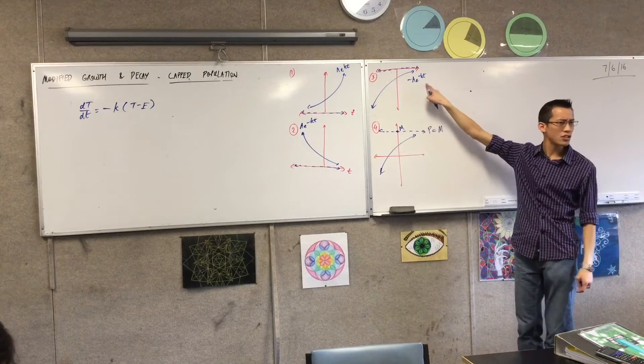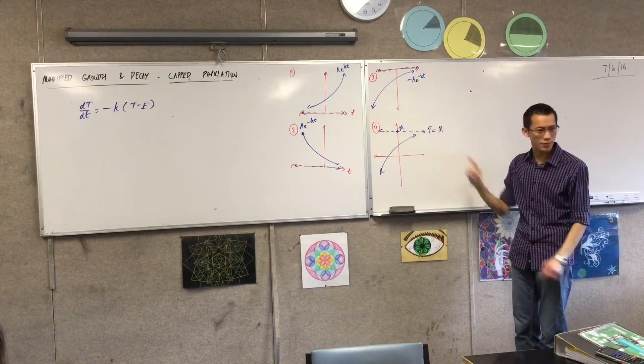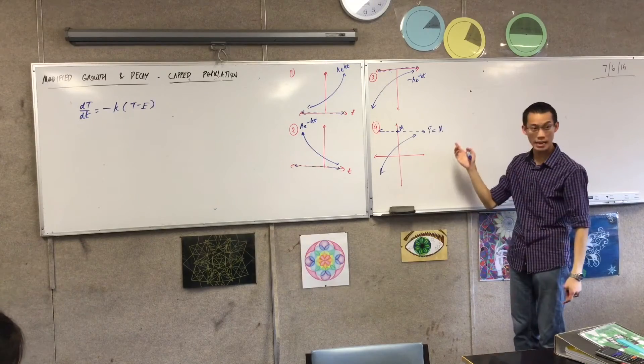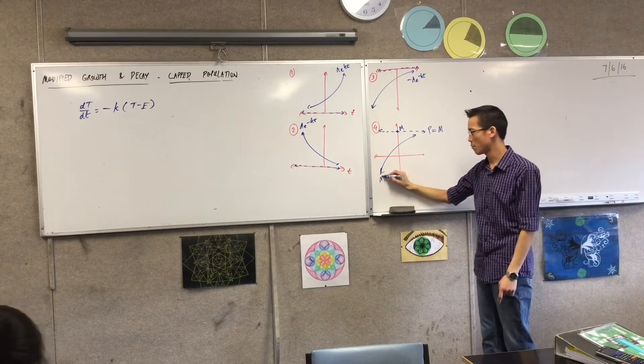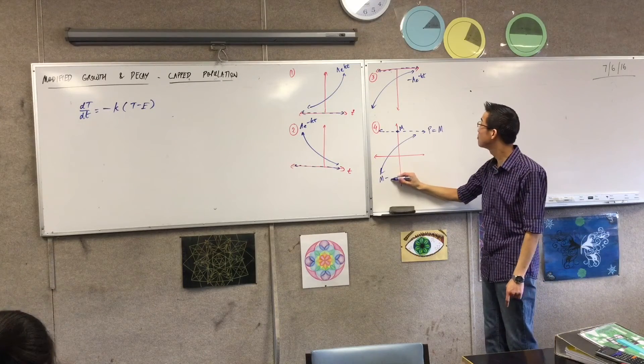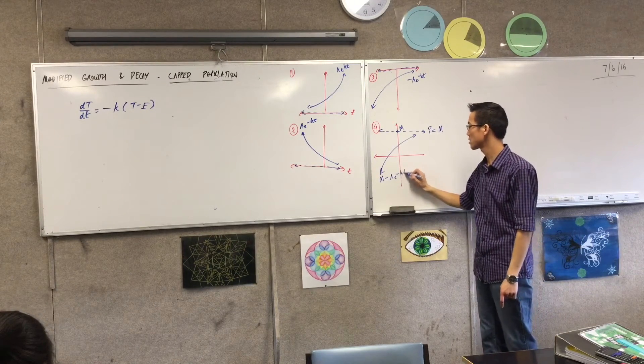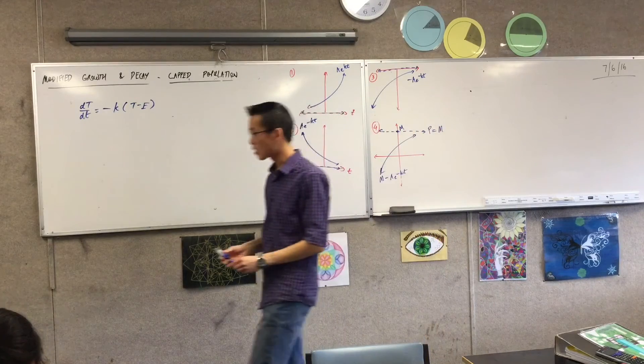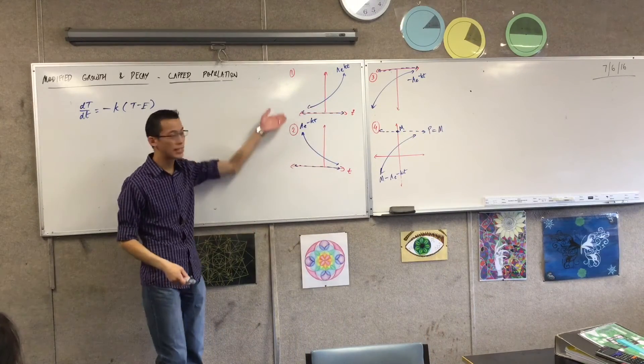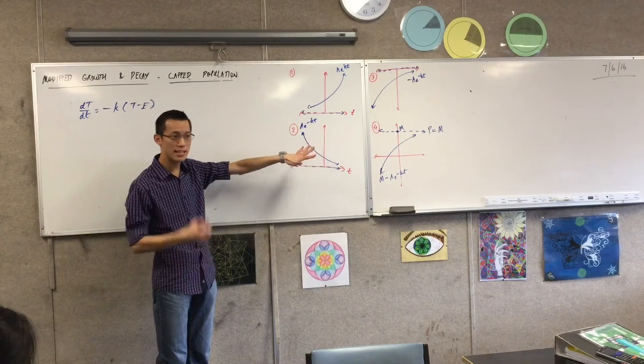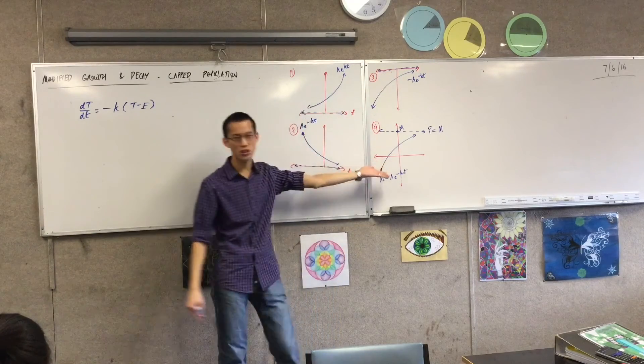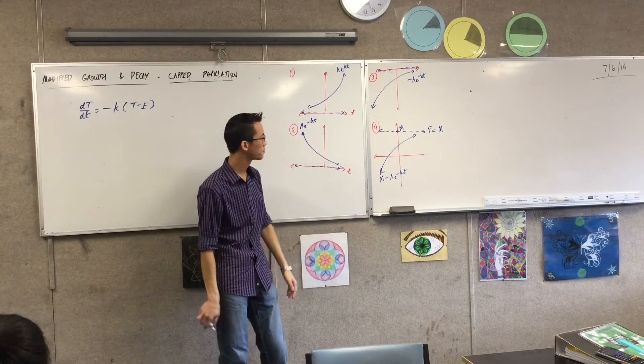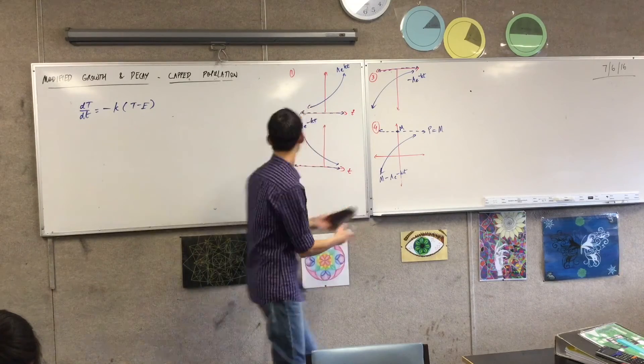How does that change this equation? This is this vertically shifted up by M units. So the equation of this will be M, take away, Ae to the minus kt. Do you agree? Do you see how I started with growth? I went to decay. I modified this decay situation to turn it upside down, so it had this growing idea. And then I just gave it some numbers so that it actually made sense. So, we want to actually have this now.